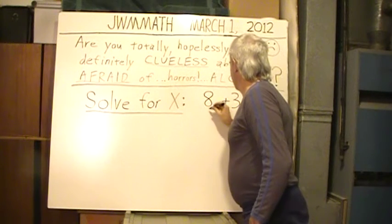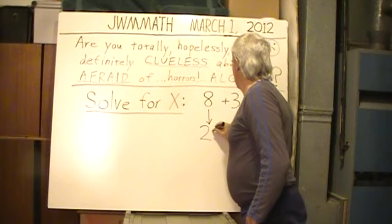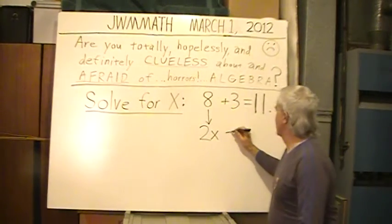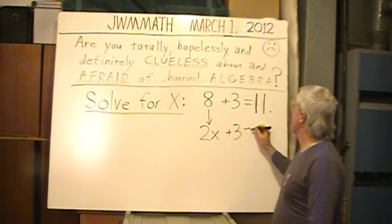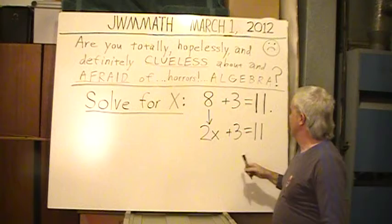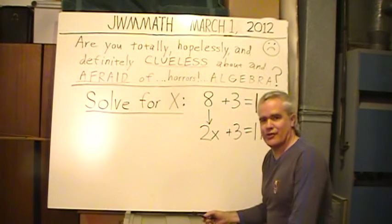So I'm going to put the 8 down here. Now 8 is really that 2x that we had earlier. In our original equation, 2x plus 3 equals 11.